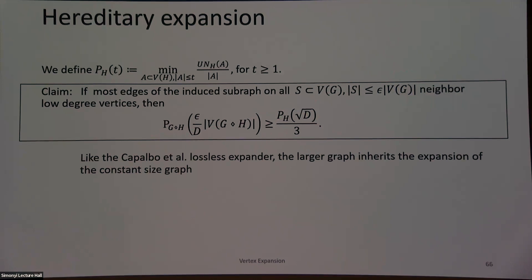This is similar to the zigzag product construction for lossless expanders — it's a similar idea where I'm trying to create a graph product where a very large graph inherits optimal expansion properties of some constant-size graph. We're going to do something similar here.